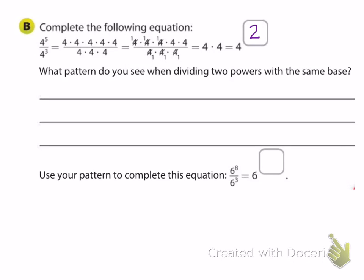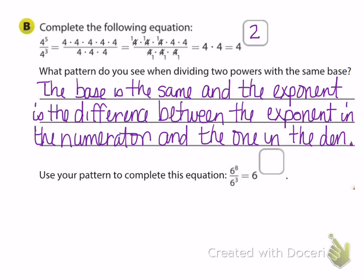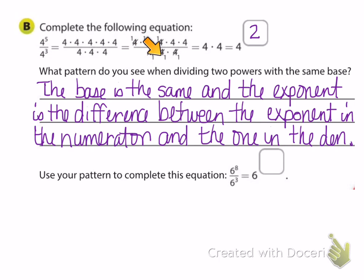You've written your pattern — here's how I've written it. The base stays the same going from the left expression to the right. The exponent is the difference between the exponent in the numerator and the one in the denominator: five minus three equals two. The reason we subtract is because those three fours in the denominator cancel with three of the fours in the numerator, becoming factors of one.